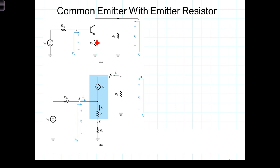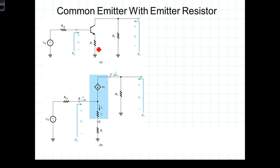Because the emitter is no longer grounded, we're going to replace the transistor with its equivalent T model. We've got the dependent current source alpha times the emitter current I_E, and then instead of the R_pi resistance, we have the R_E resistor, which is the resistance seen looking into the emitter, which falls in series with this emitter resistor.